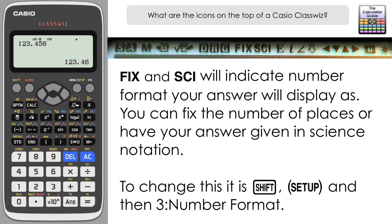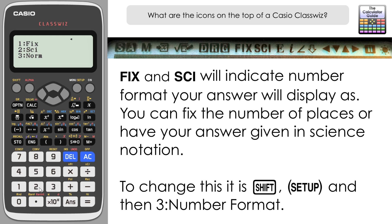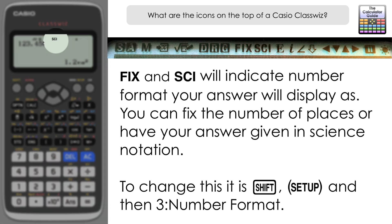Next to that is Sci, referring to scientific notation or standard index form. Back to number format in the setup menu and option 2 for science notation — this selects the number of digits displayed along with times ten to the power of. Selecting 2 digits and pressing SD to get through to the decimal display, you can see it's now displayed in scientific notation: 1.2 times ten to the power of 2, and Sci is active in the icon at the top.